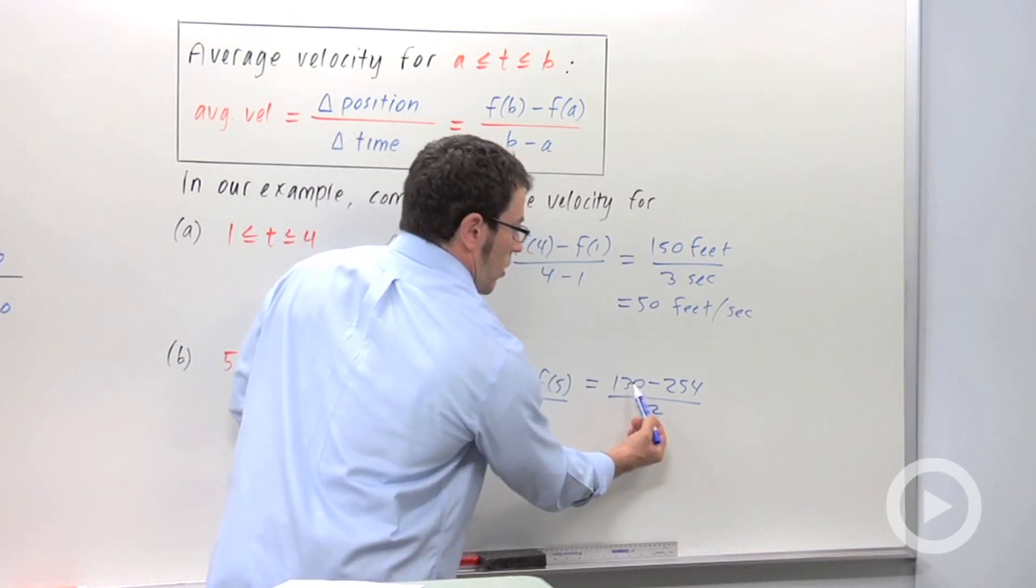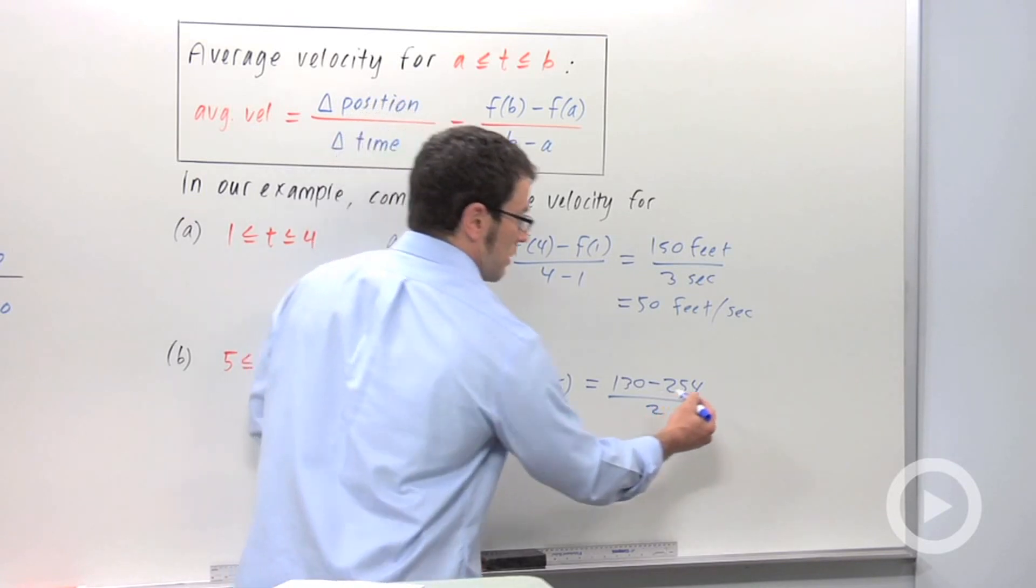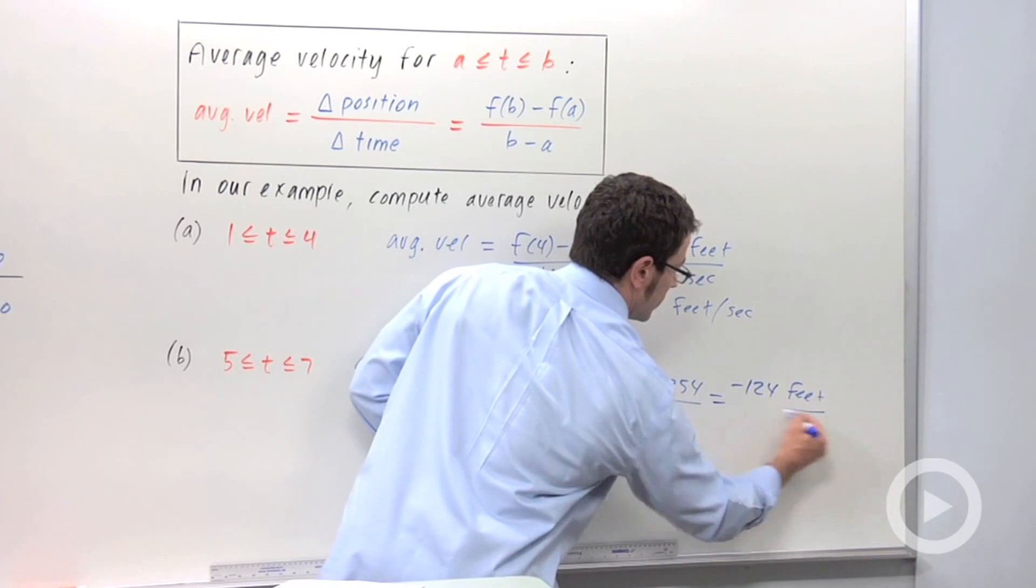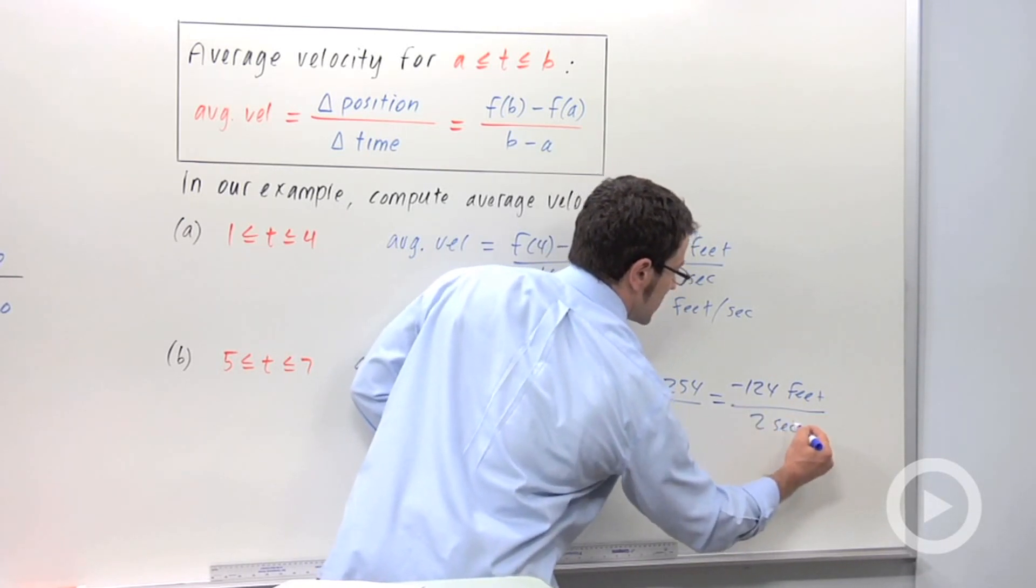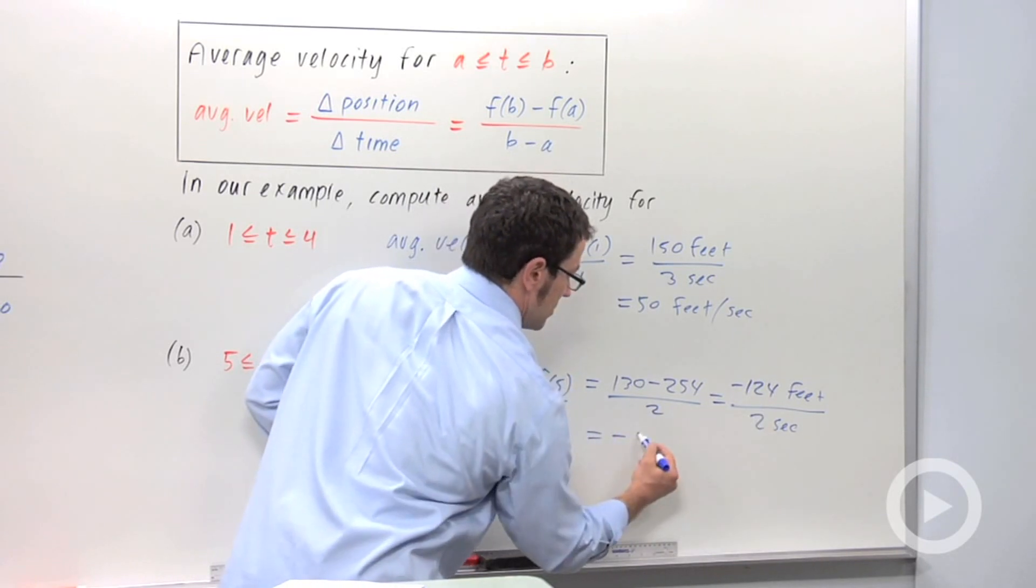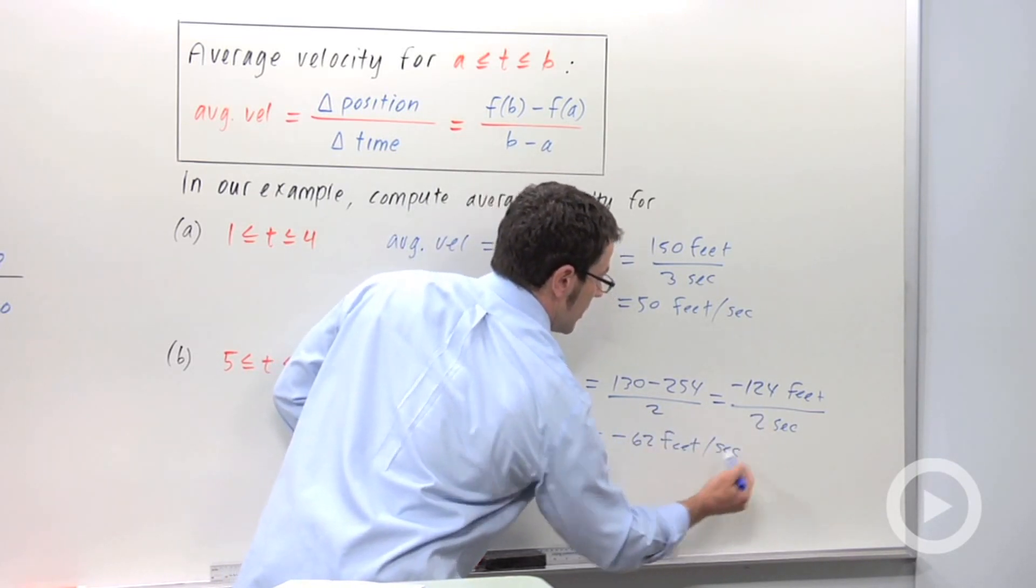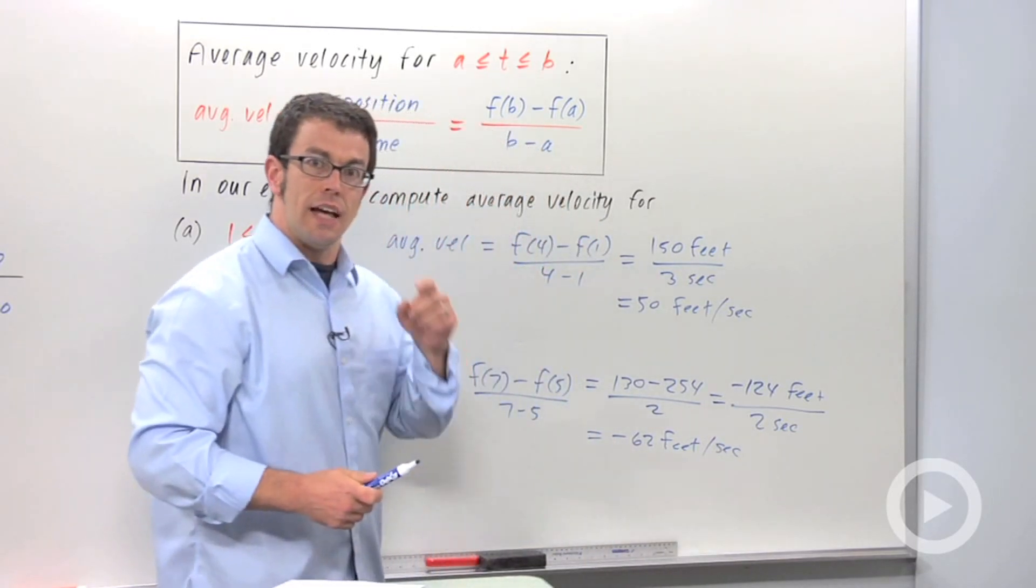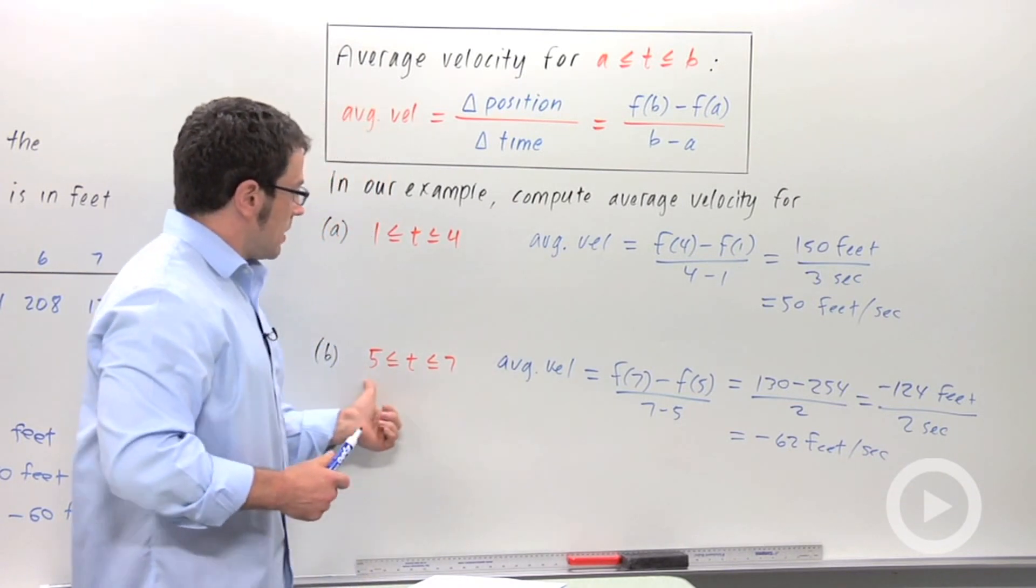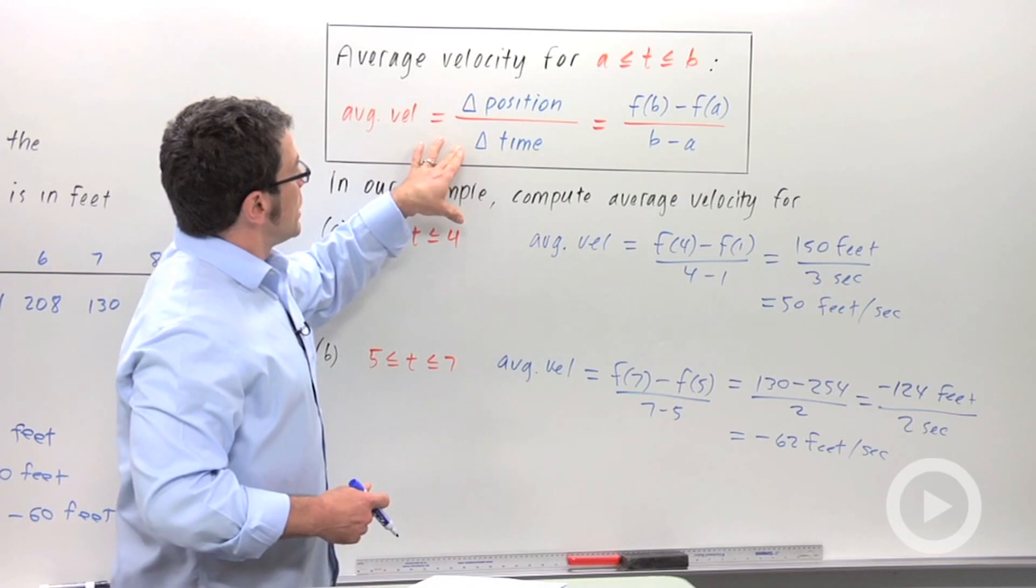Now this numerator, 130 minus 254 is negative 124, and that's in feet over 2 seconds. And that's going to give me minus 62 feet per second. Now what does it mean that the average velocity is negative? It just means that the pumpkin's probably on its way down on this interval of time.